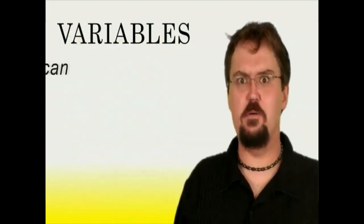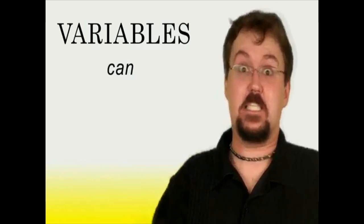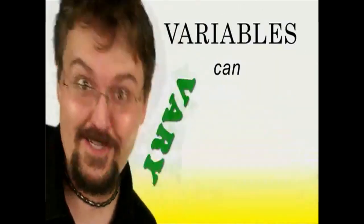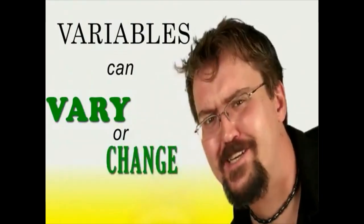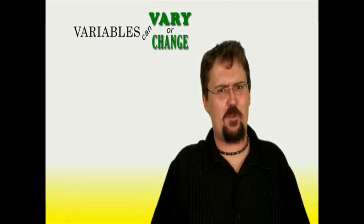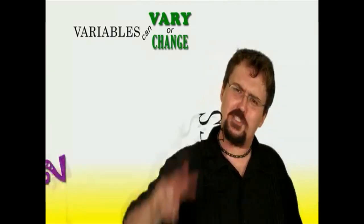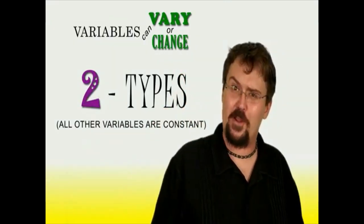A variable is something that varies or changes. In a correctly set up science experiment, there are two types of variables.